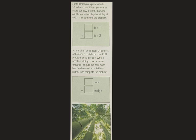Bo and Chun's dad needs 148 pieces of bamboo to build a boat and 228 pieces to build a bridge. Write a problem adding those numbers together to figure out how much bamboo he needs to build both items. Then complete the problem. So the amount for the boat, the amount for the bridge, and the total.